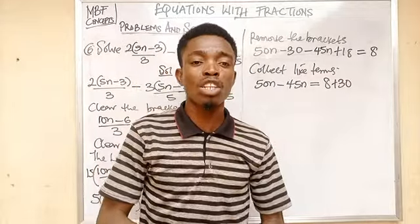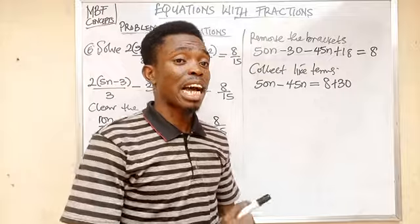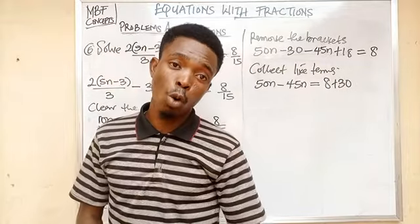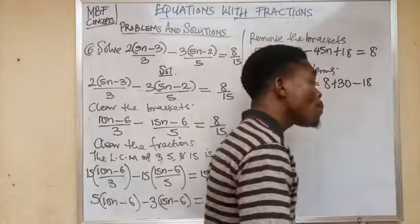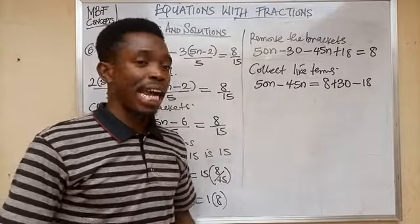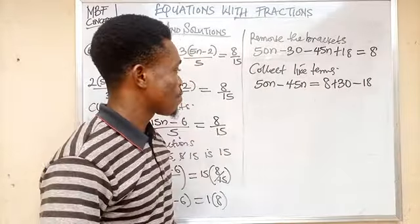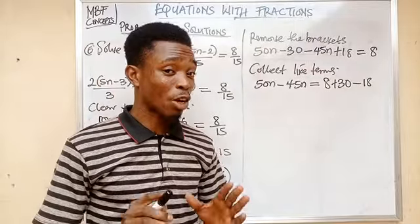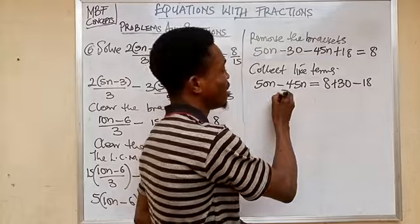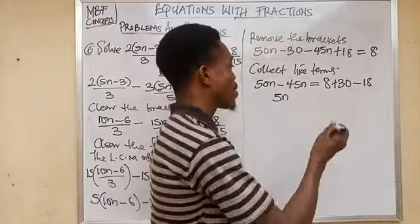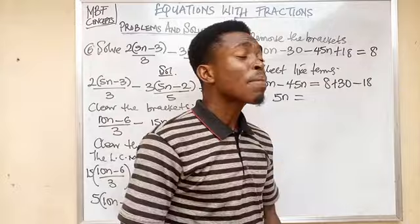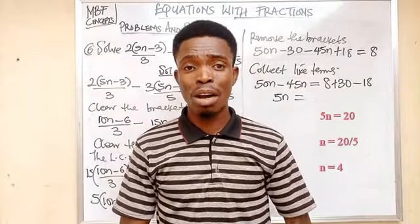Now 50n minus 45n gives 5n on the left. On the right, 8 plus 30 equals 38, and 38 minus 18 gives 20. So 5n equals 20, meaning n equals 20 divided by 5, which gives n equals 4.